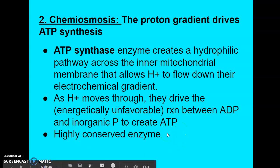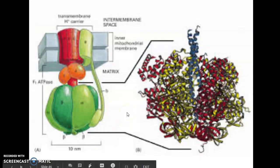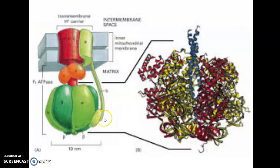ATP synthase is a very highly conserved enzyme — very similar in the majority of eukaryotic organisms today. It is a multi-subunit protein involved in what we call rotary catalysis. On the matrix side of ATP synthase, we have a large lollipop-shaped structure with six different subunits. Then we have an elongated arm that holds the whole enzyme in place by tying it to a group of transmembrane proteins, forming what we call the stator — that is the motor part of the protein.